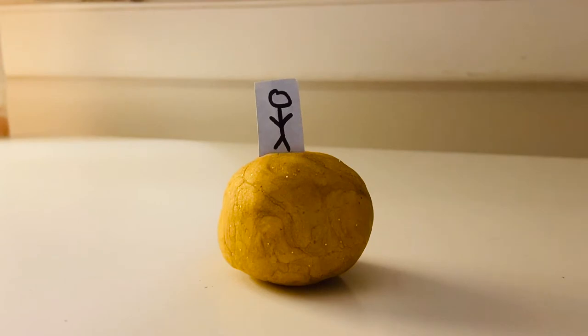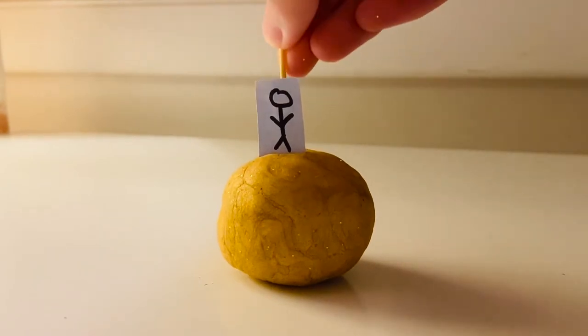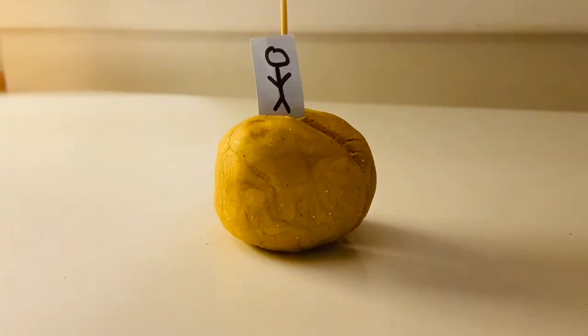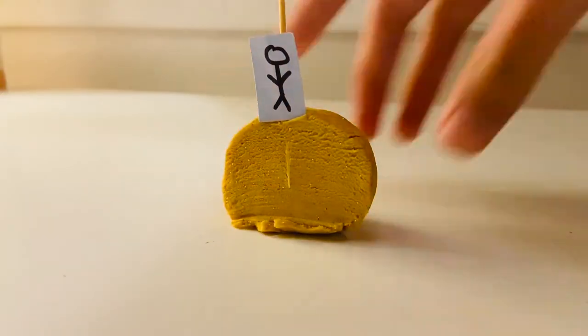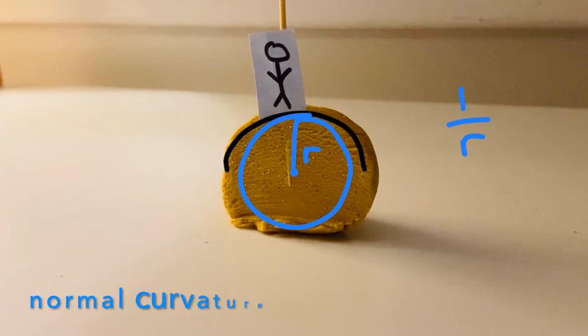To start out, let's shrink ourselves down and stand on a ball of play-doh. As long as the surface of the ball is smooth to a certain extent, we can define a normal vector to the surface, attached to the point we're standing on. Now, any plane intersecting that normal vector will also intersect the surface of the play-doh, creating a curve. If we approximate the curve at that point with a circle, then its curvature is defined by 1 over the radius. It turns out that the curvature of this intersection is what we call the normal curvature.